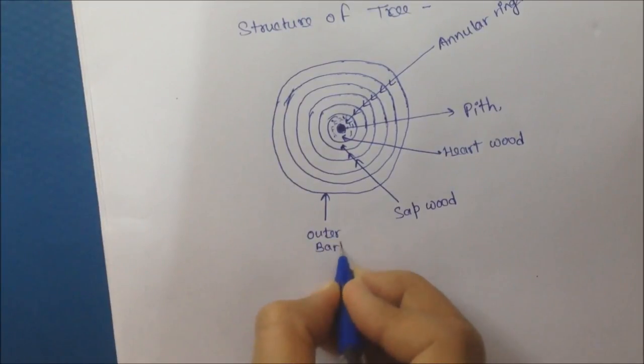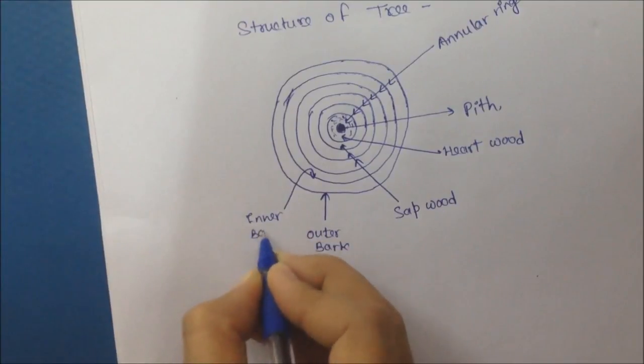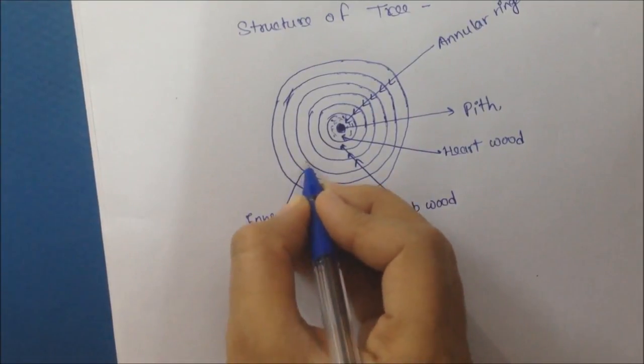Fourth is bark. It has two layers. First is outer bark and second is inner bark. Fifth point is cambium layer.